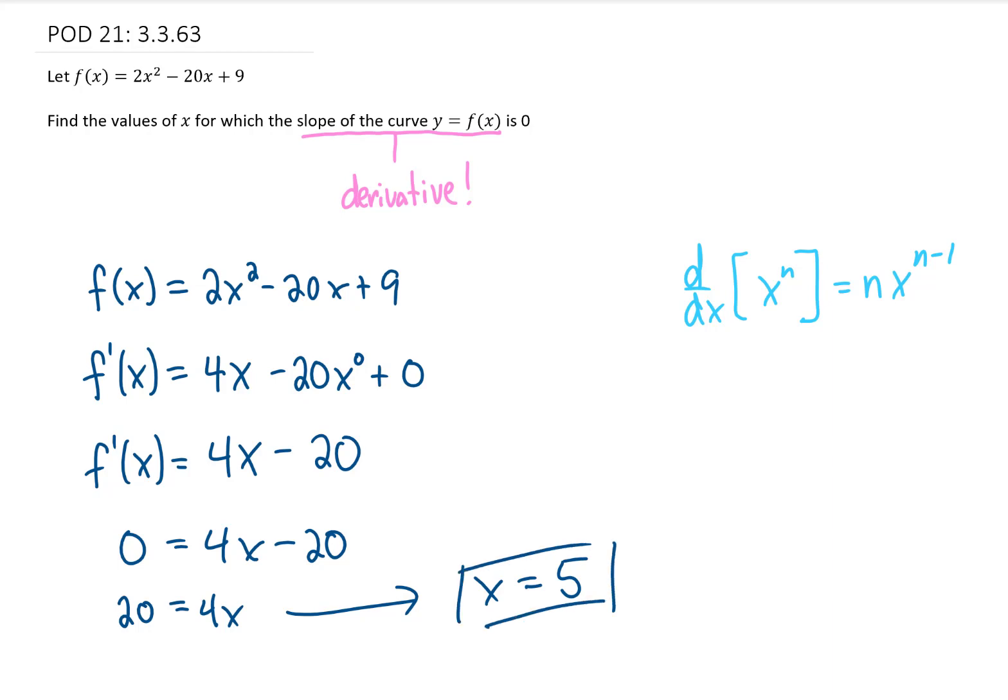Now I would encourage you to graph this function and take a look at it to confirm that what we got was true. I don't know exactly what this function looks like, but it should be a parabola opening upwards. And when x equals 5, the slope of this curve is going to be 0.